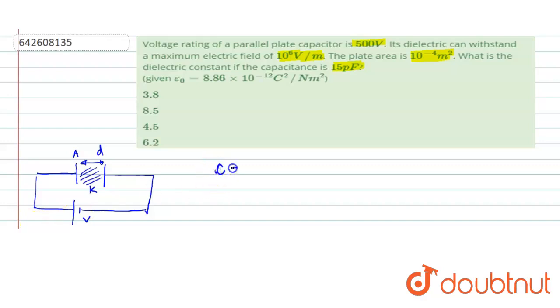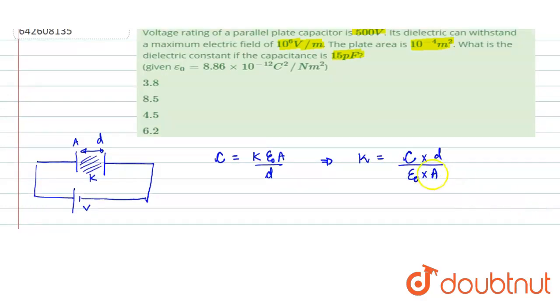As we know, capacitance is given by K epsilon naught A by D. So for finding the value of K, we can write it as K = C × D divided by epsilon naught × A. We have to put the value of C, D, epsilon naught and A.